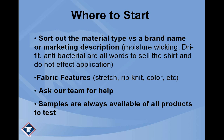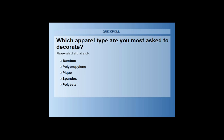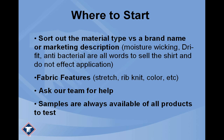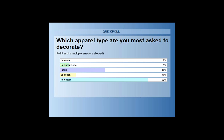Welcome Andy, and I'd also like to extend a warm welcome to those of you joining the webinar today. The first poll question: which apparel type are you most asked to decorate? We just have some basic selections here. I'll close the poll in just about five more seconds. So it looks like still mostly polyester, with some spandex, PK, polypropylene, and zero bamboo.